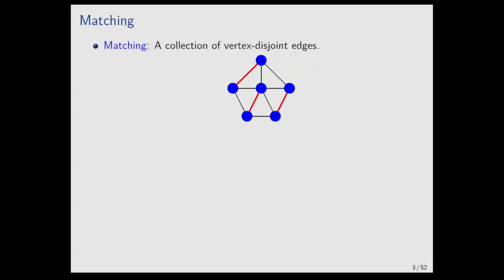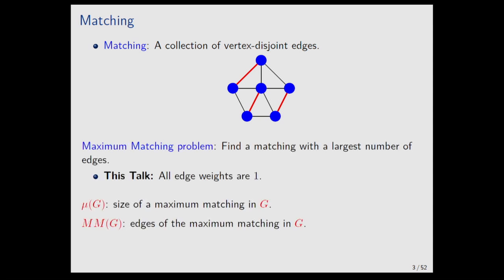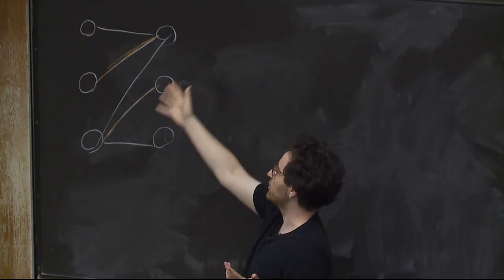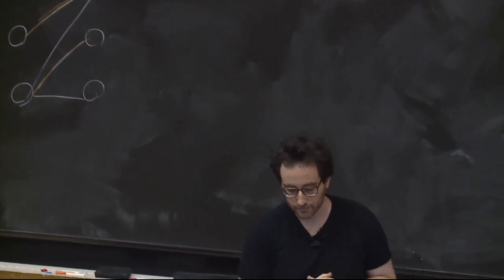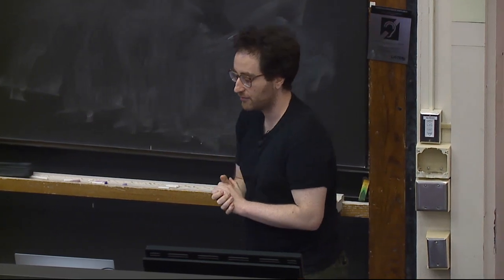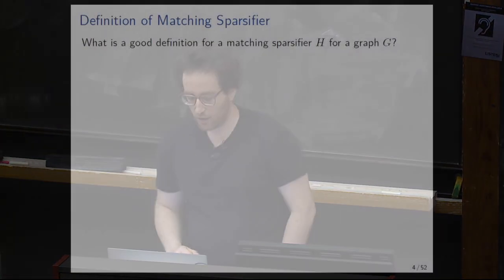So, matching — I'm assuming you've all seen this problem. You just have a graph and you want to find a collection of disjoint edges. I'll mostly be focusing on bipartite graphs, just to keep things nicer, and I'm going to assume it's an unweighted graph with all weights one. The notation I'll use: mu of G is the size of the maximum matching in G. In this graph with no perfect matching, the best matching matches two edges, so mu of G would be two.